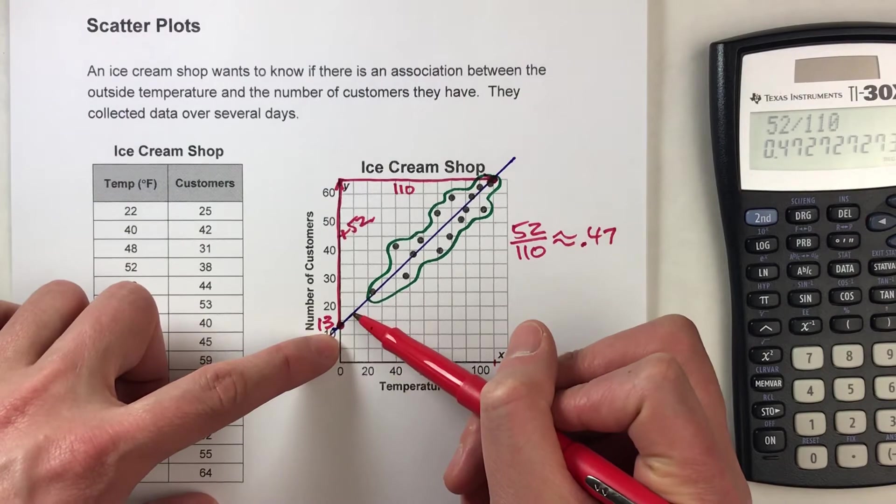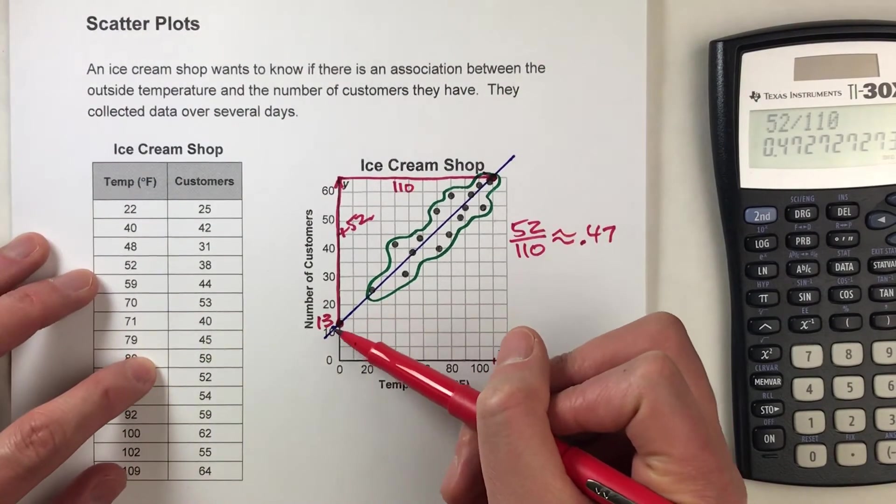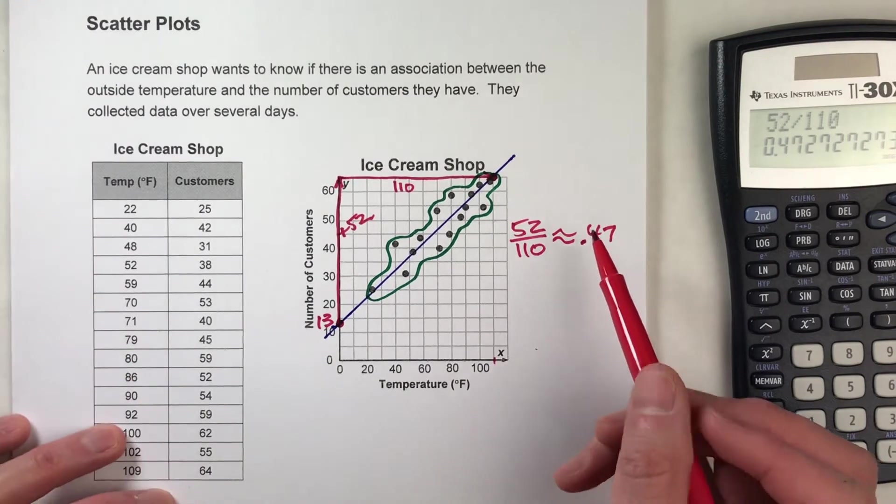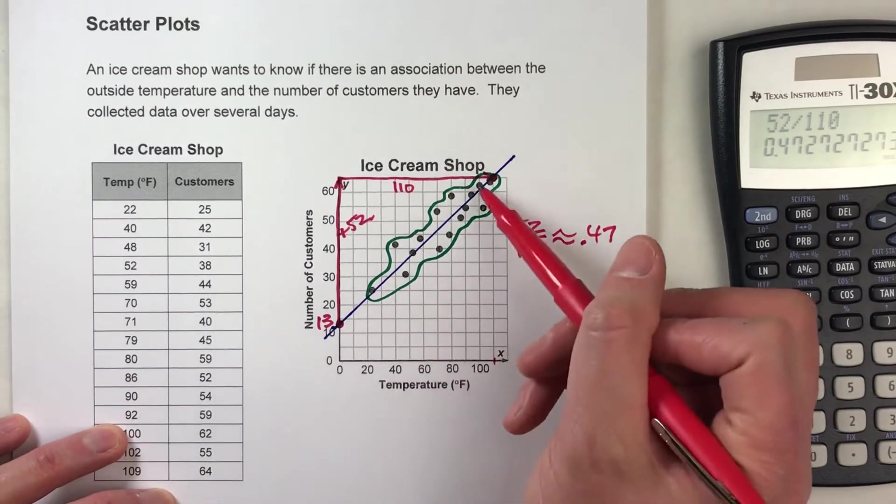However, if you pick two points really close together and you're off by a little bit on one or both of your points, it's going to strongly affect your slope. So I always suggest picking points as far away as possible.